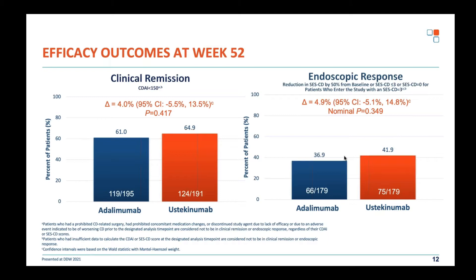You can do an analysis looking at patients who responded at the end of induction — as they would have been re-randomized in a classical responder design — and assess what proportion would have had response at week 52. In that analysis, response rates reach around 80–90% with ustekinumab. So what distinguishes these patients from those in the original phase 3 trials?